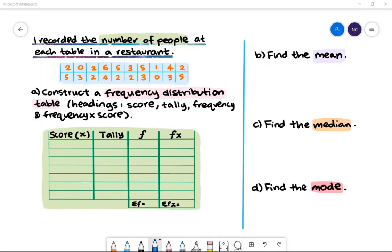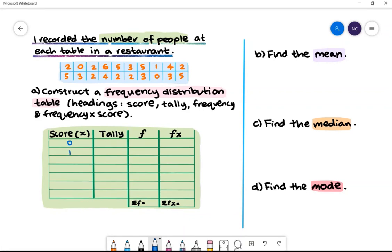We'll first put the scores in ascending order. The lowest score is 0 and the highest score is 6.